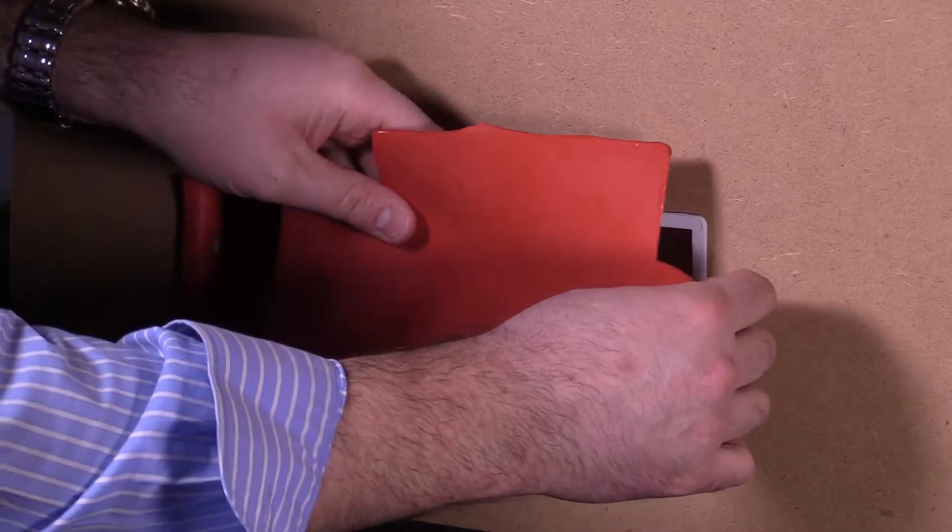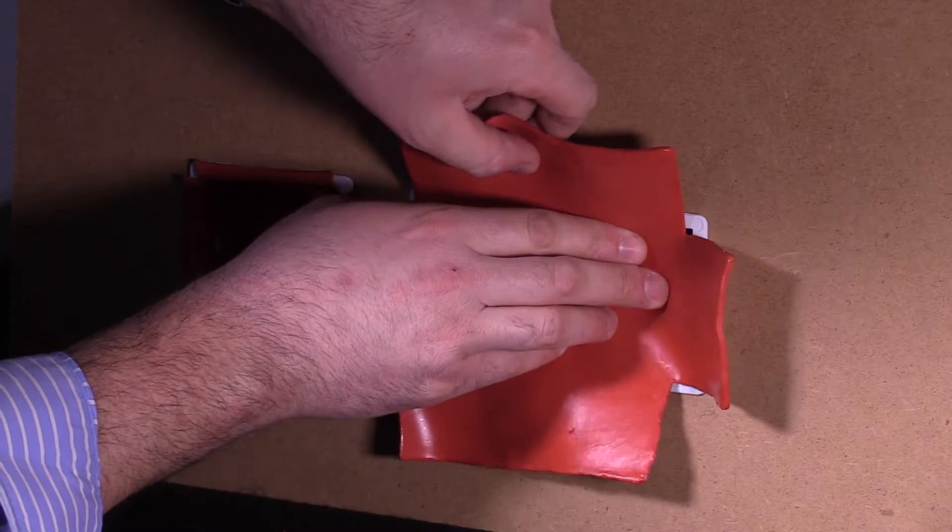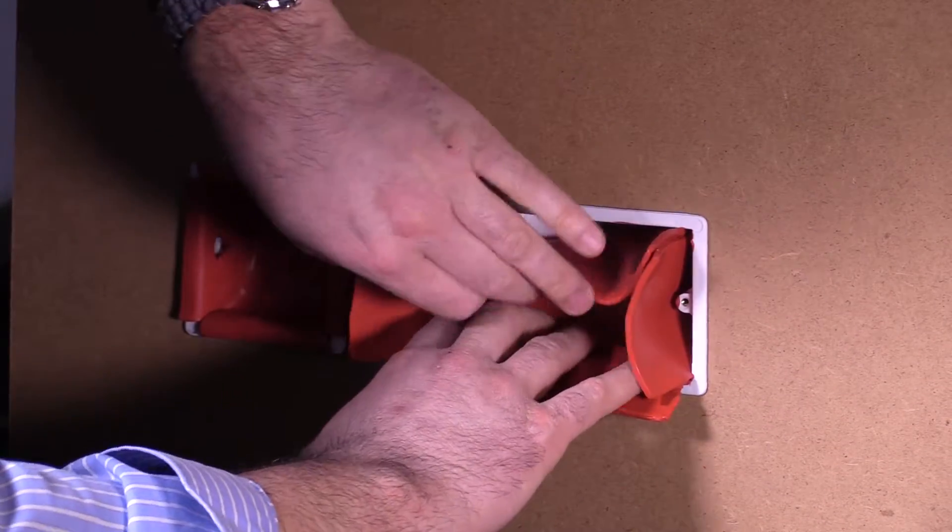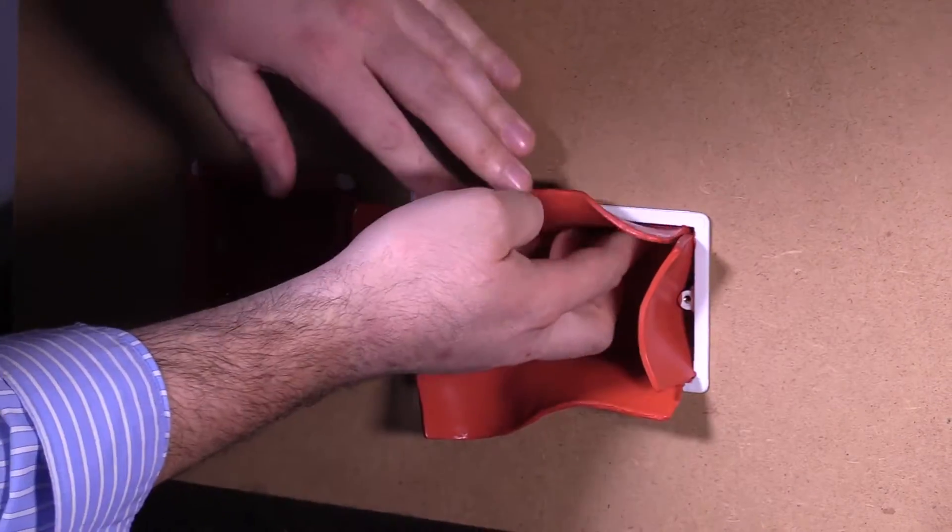Now you push the putty pad into the back of the socket box, making sure that it's pushed tightly up against it nicely into all the corners.